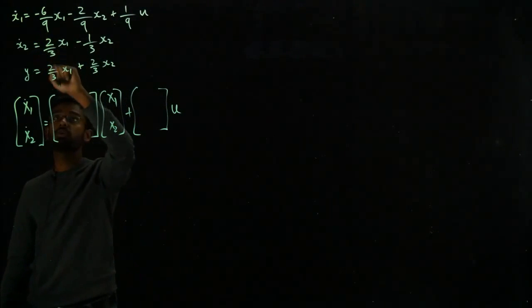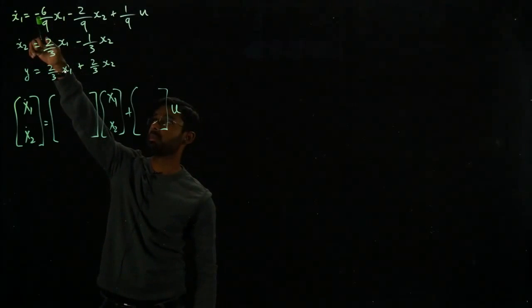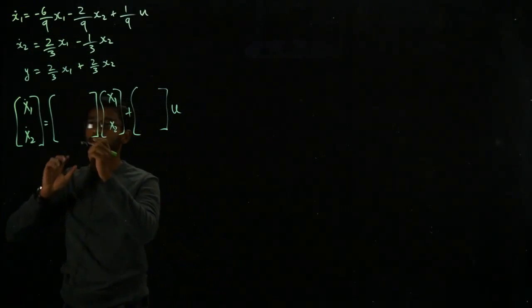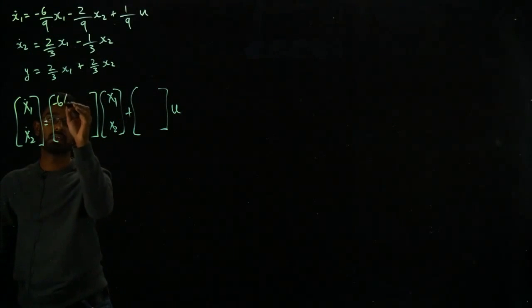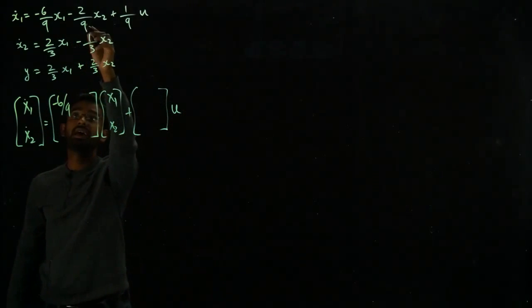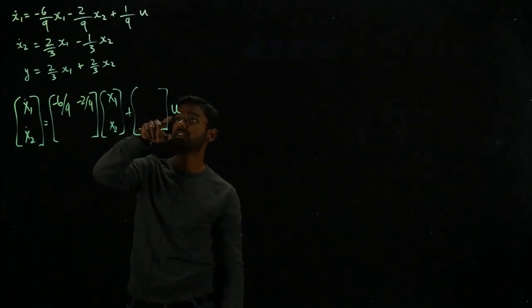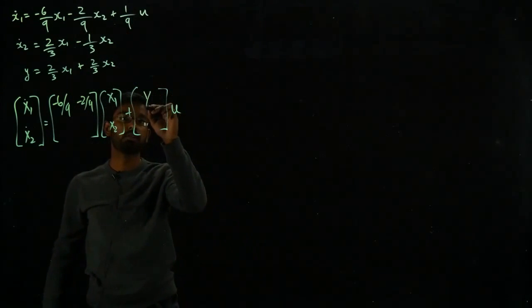I'm going to go back to these equations. You can see x₁ is being multiplied by minus 6 over 9, so I'm going to write minus 6 over 9 for x₁. Then for x₂ it has minus 2 over 9. And then in terms of the input I have 1 over 9.